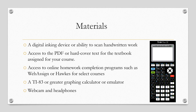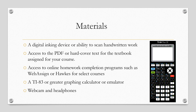You need access to the PDF or hardcover textbook for each course. Sometimes you will need access to an online homework completion program such as WebAssign or HAWKS, depending on the course. It is suggested that you have a TI-83 or greater graphing calculator or emulator, which you can often find for much cheaper than buying a physical calculator. You also need a webcam and headphones to communicate with the instructor or classmates.